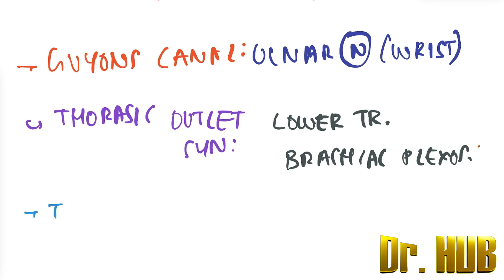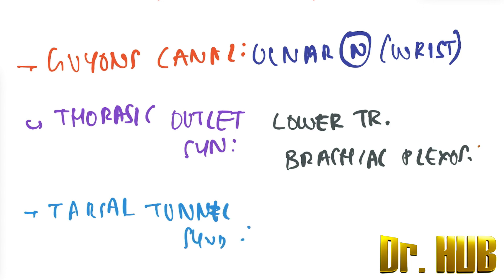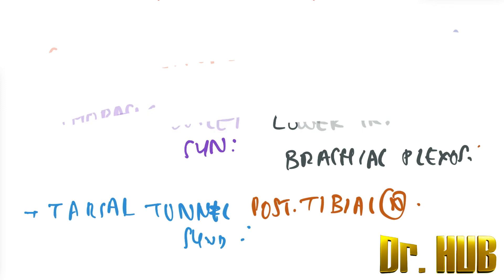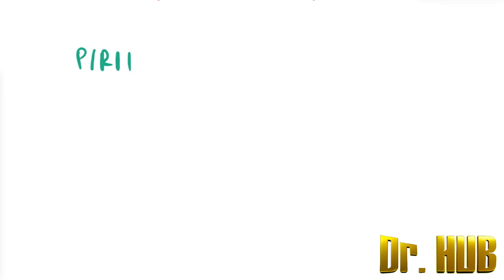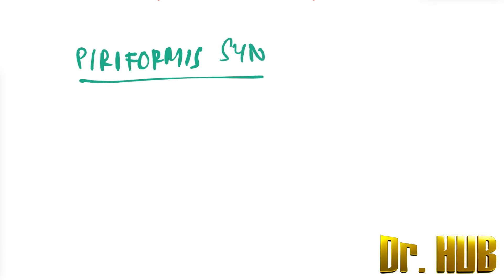Then we look at the Tarsal Tunnel Syndrome. It is associated with the Posterior Tibial Nerve — as it has 'T', it is the Posterior Tibial. Then comes the Piriformis Syndrome, which is associated with the sciatic nerve.